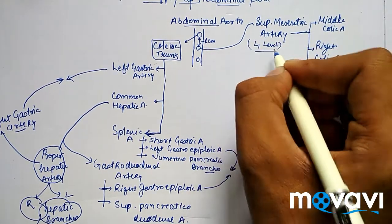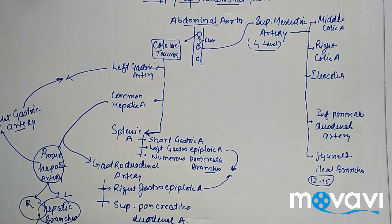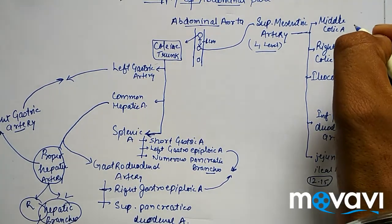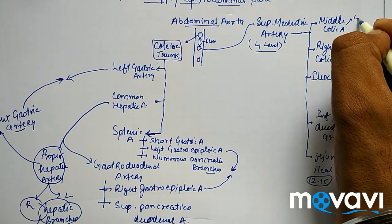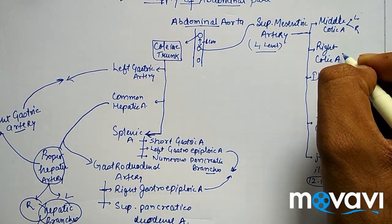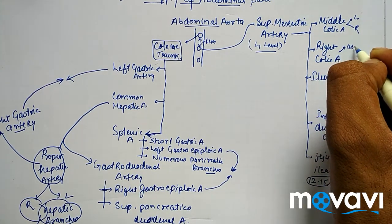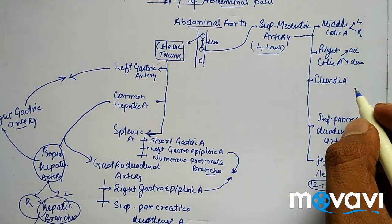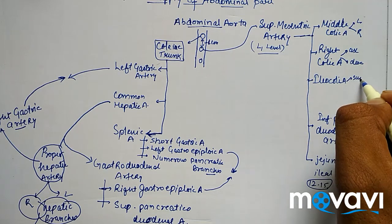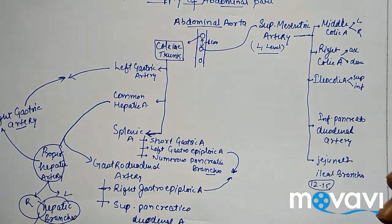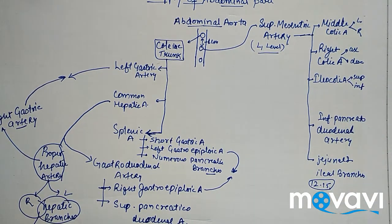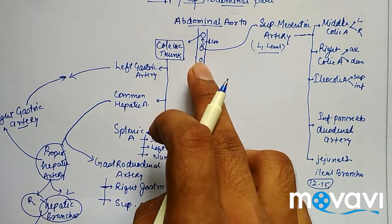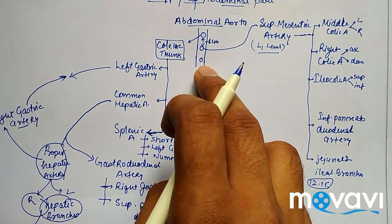Now looking at further divisions: the middle colic artery divides into left and right branches. The right colic artery divides into ascending and descending branches. The ileocolic artery has superior and inferior branches with no further subdivisions.